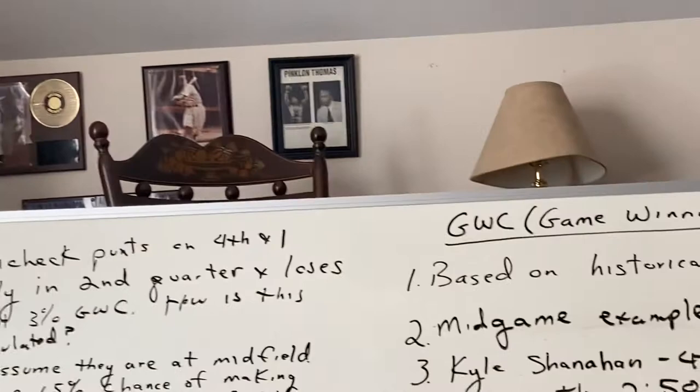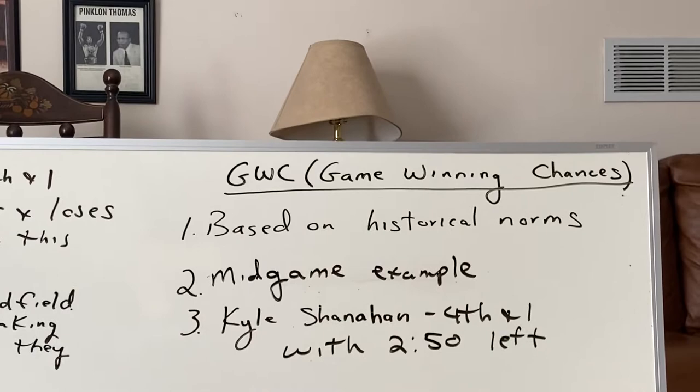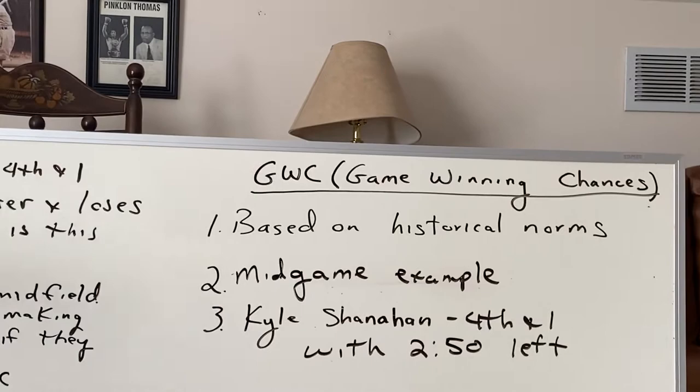Hi, my name is John and welcome to another edition of Statistics Quest. I'm going to talk today about something called game-winning chances. That's a term you hear more and more in pro football. Game-winning chances basically establishes a probability, based on historical norms, of a team winning under certain conditions. We're going to go over a mid-game example, and then we'll talk about a specific Kyle Shanahan example.